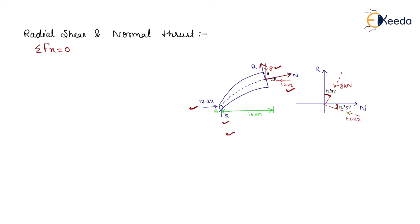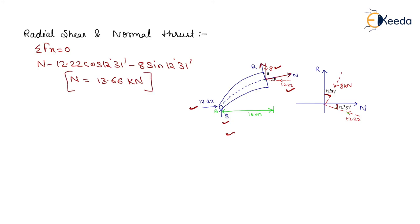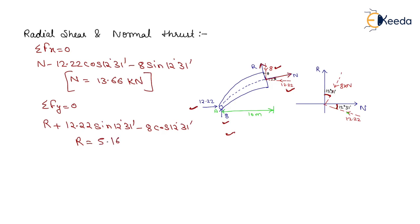Using horizontal equilibrium: N minus 12.22·cos(12°31') minus 8·sin(12°31') equals zero, giving normal thrust N equals 13.66 kilonewtons. Using vertical equilibrium: R plus 12.22·sin(12°31') minus 8·cos(12°31') equals zero, giving radial shear R equals 5.16 kilonewtons. Thus, both the radial shear and normal thrust have been computed.